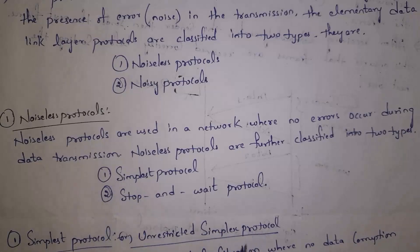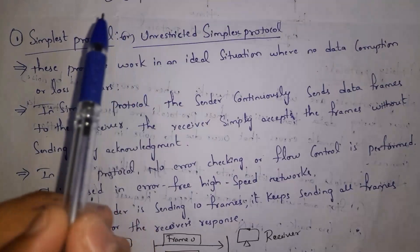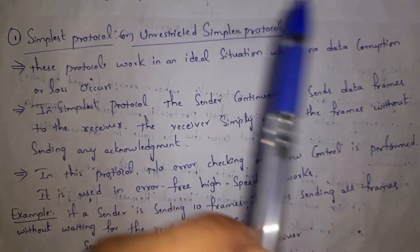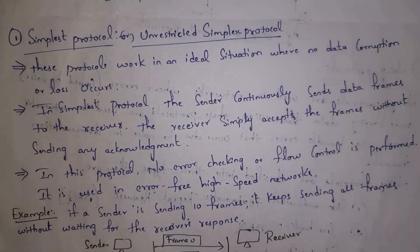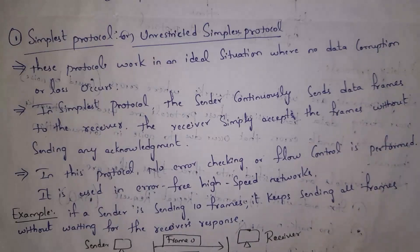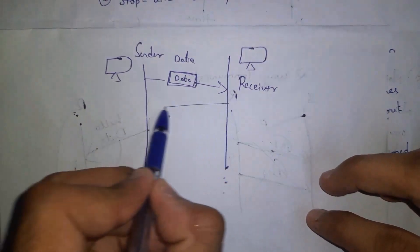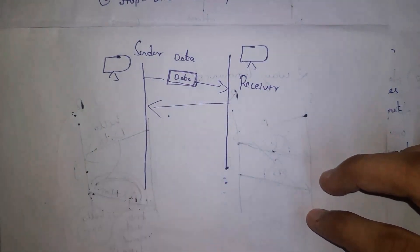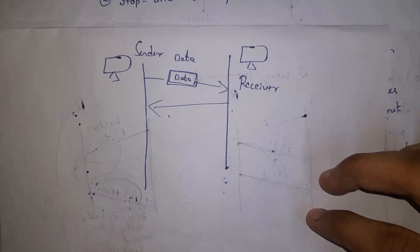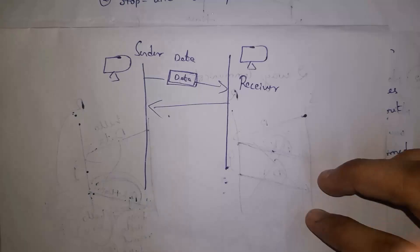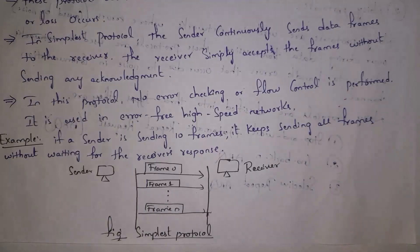First I will explain what is simplest protocol. We also call simplest protocol as unrestricted simplex protocol. In simplest protocol, whenever sender sends data to receiver, the data successfully reaches the receiver without any errors. Whenever sender sends a data frame, receiver will not give any reply — that is, receiver will not send any acknowledgement. So sender can continuously send data.